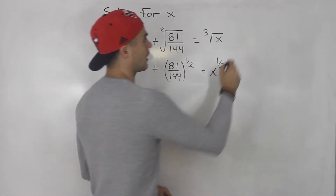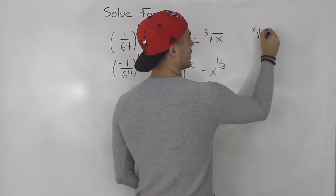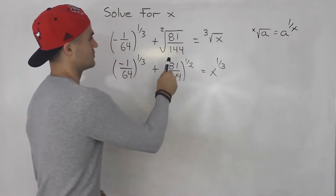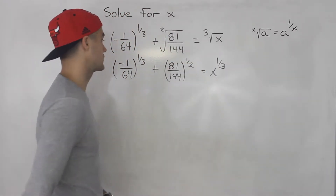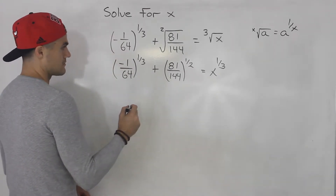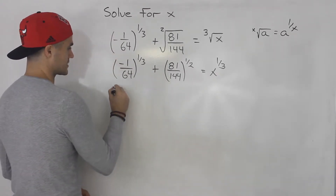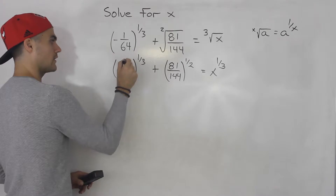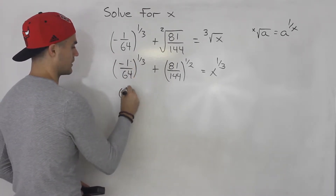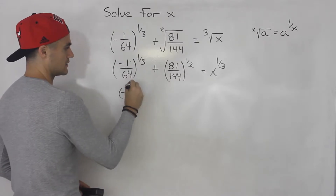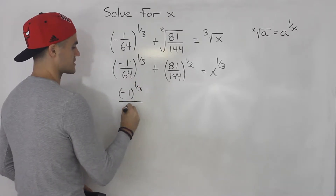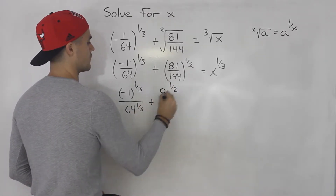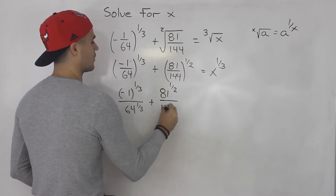The rule is: the x-th root of anything is just that to the power of 1 over x. So that's the rule I use to convert both of these forms to exponential form. From here, we can distribute the exponent to the numerator and denominator. So we'd have negative 1 in brackets to the power of 1 over 3, all over 64 to the power of 1 over 3. And this here would be 81 to the power of a half over 144 to the power of a half.